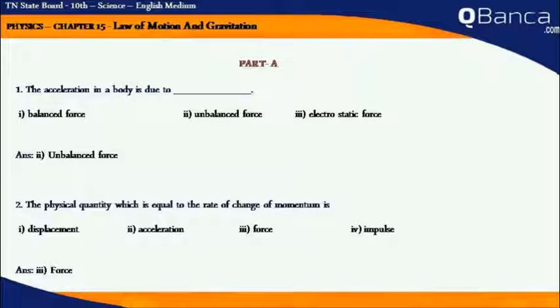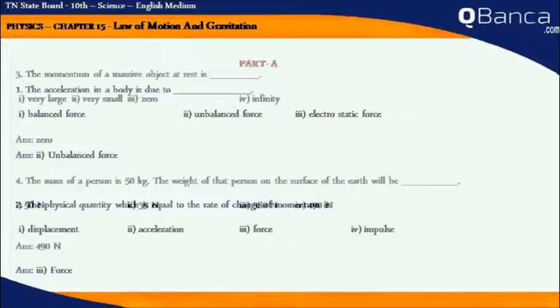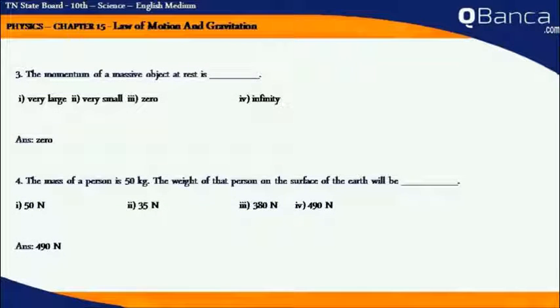The acceleration in a body is due to unbalanced force. The physical quantity which is equal to the rate of change of momentum is force. The momentum of a massive object at rest is zero.